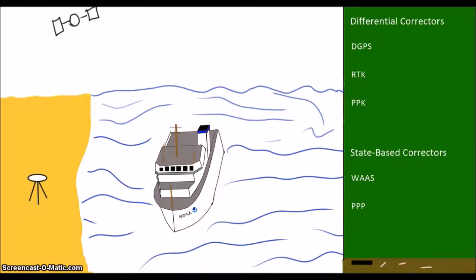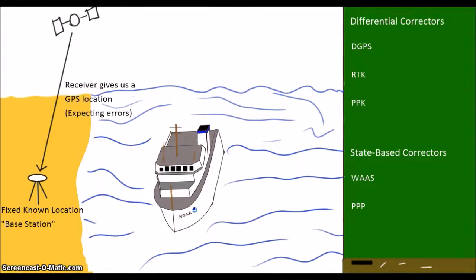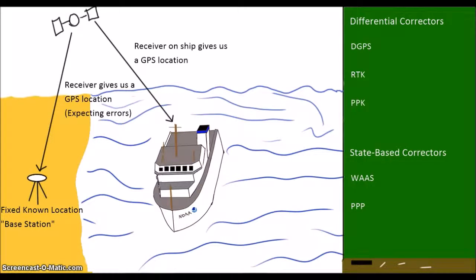Let's dig into the differential approach first. The idea here is that we have a GPS receiver in a fixed known location. Because we know where this receiver, the base station, really is, we can measure the difference between its known location and where the GPS signal says it is, and assume that the difference is our positioning error. If our mobile GPS receiver, the rover, is close enough to this fixed receiver, we can say that the error is the same for both locations and remove that error from our rover's position.